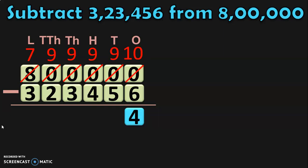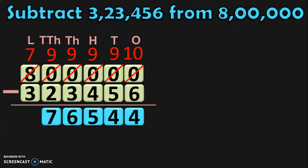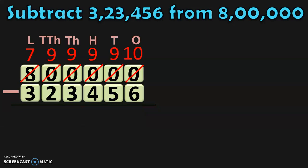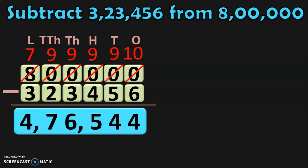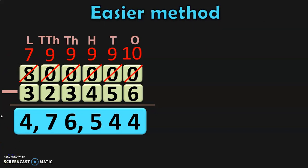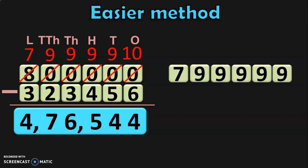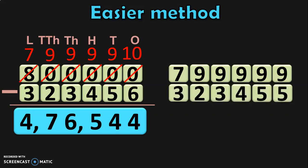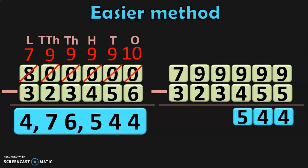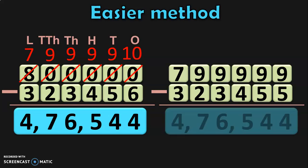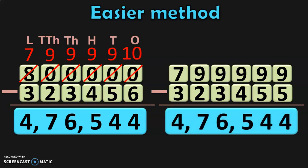Now you can do the subtraction: 10 minus 6 is 4, 9 minus 5 is 4, 9 minus 4 is 5, 9 minus 3 is 6, 9 minus 2 is 7, and 7 minus 3 is 4. So, the subtraction of the two 6-digit numbers gives you the answer 4,76,544. We saw the subtraction by regrouping or the borrowing method. Now I will teach you an easier method. Subtract the bigger number by 1, which gives you 7,99,999. Subtract the smaller number by 1, which gives you 3,23,455. When you subtract these two numbers, you get the same answer 4,76,544.